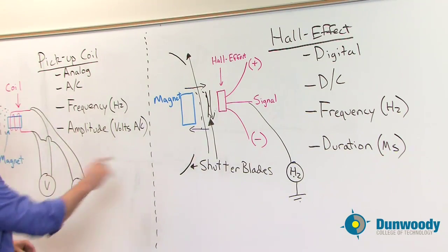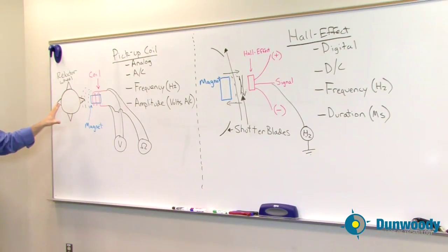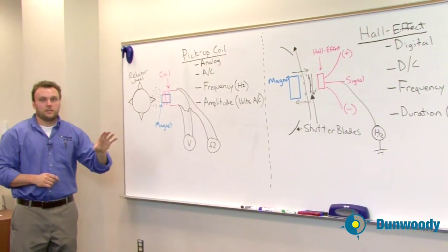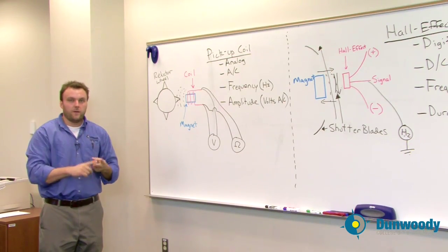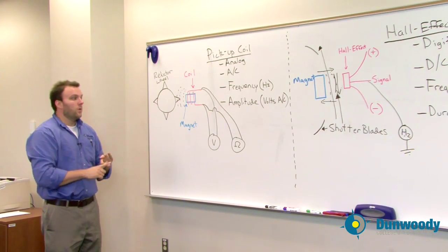In both cases, the shutter blade and the reluctor wheel are going to be connected to something that spins in the engine, whether that's a distributor, a crankshaft, a camshaft, or anything else.